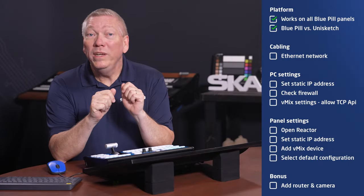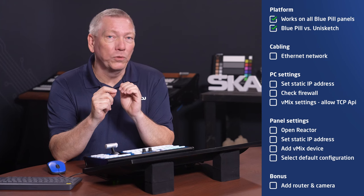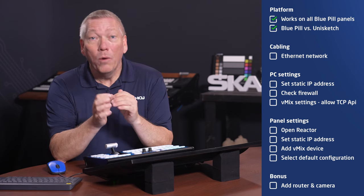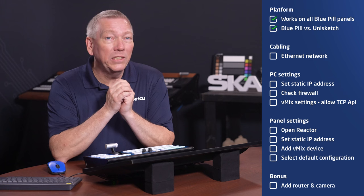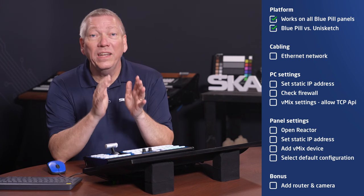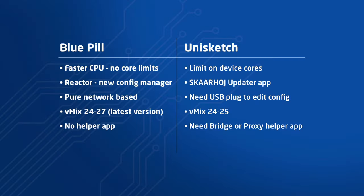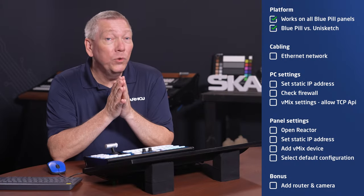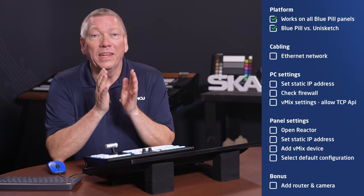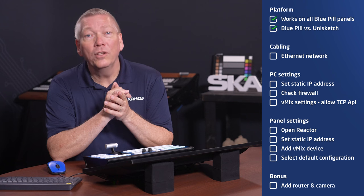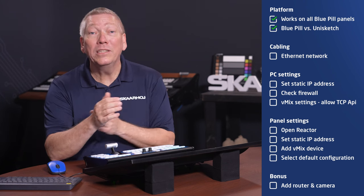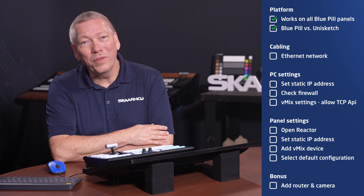Also note, we have two product platforms: BluePill and Unisketch. While we do have vMix integrations for both platforms, this guide will only focus on the BluePill version. BluePill is newer and easier to set up. It works with the latest vMix and has more commands available. Current users of Unisketch panels should know that it's fairly easy to upgrade to BluePill. Please contact SkaHoy support for more info on this.